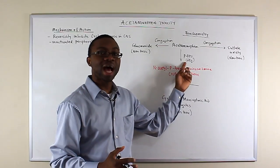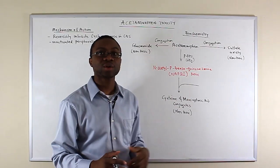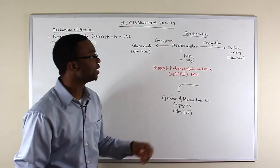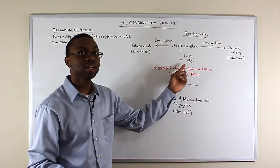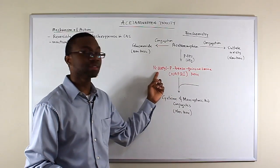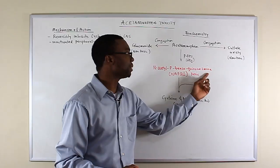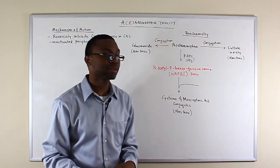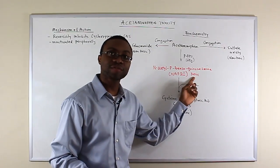Acetaminophen has to go through the liver through the cytochrome P450 pathway, especially the 2E1, to form N-acetyl-P-benzoquinone amine, which is NAPQI. This is the toxic form of the drug.